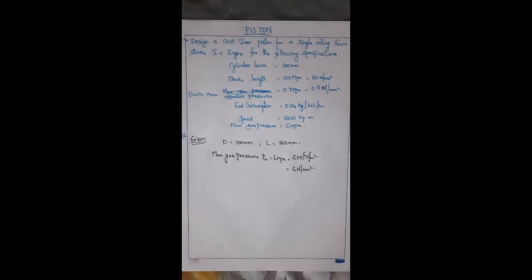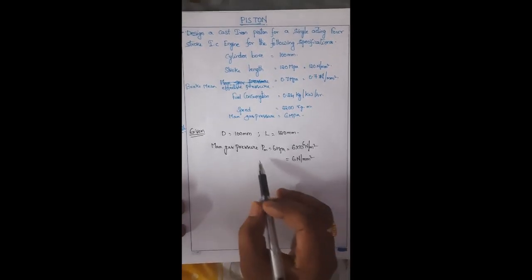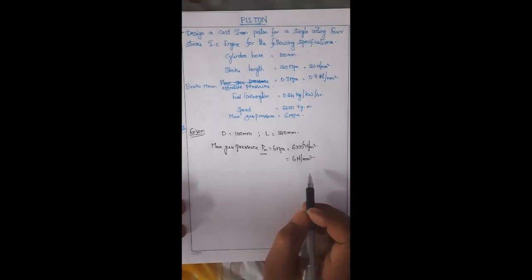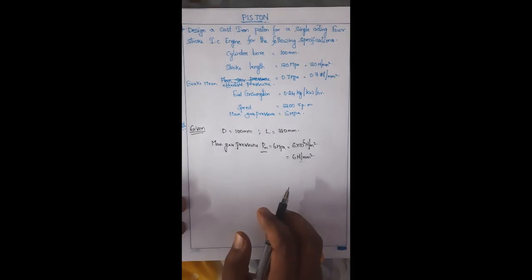Note down the given data and keep your calculator ready. In order to calculate every term mentioned in the design procedure of a piston, we have to use different formulas. The maximum gas pressure is 6 MPa, which is 6 N/mm². Note down whatever given data is projected on screen.